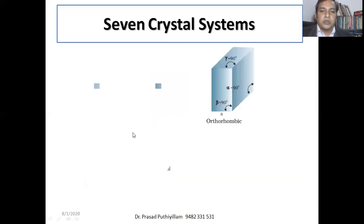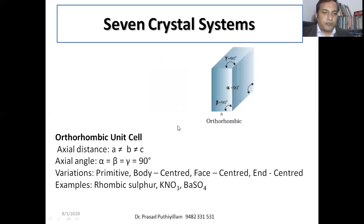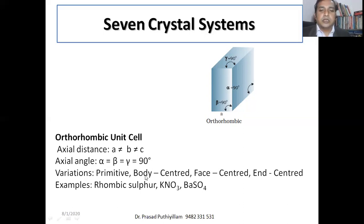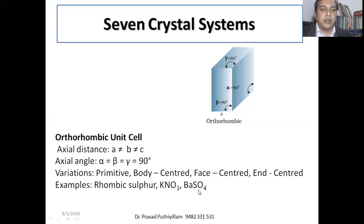Orthorhombic unit cells: all three axial distances are different — a ≠ b ≠ c — whereas the axial angles are all equal at 90°: α = β = γ = 90°. All four variations exist: primitive, body-centered, face-centered, and end-centered. Examples include rhombic sulfur, potassium nitrate, and barium sulfate.